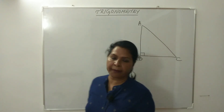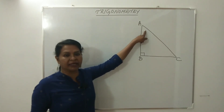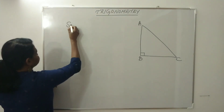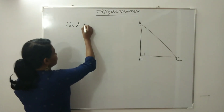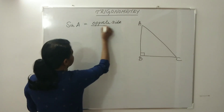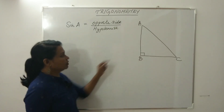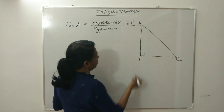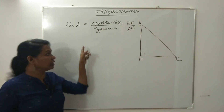The first trigonometric ratio is sine. If we consider angle A, we can write sine of angle A — simply written as sin A. The sine relation is opposite side divided by hypotenuse. So what is the opposite side of angle A? It is BC. Therefore sin A equals BC divided by AC.